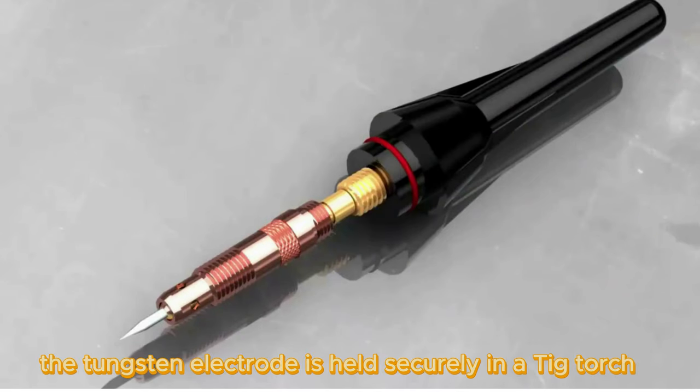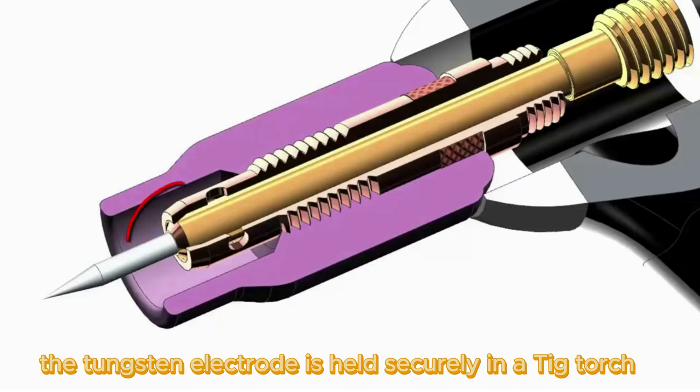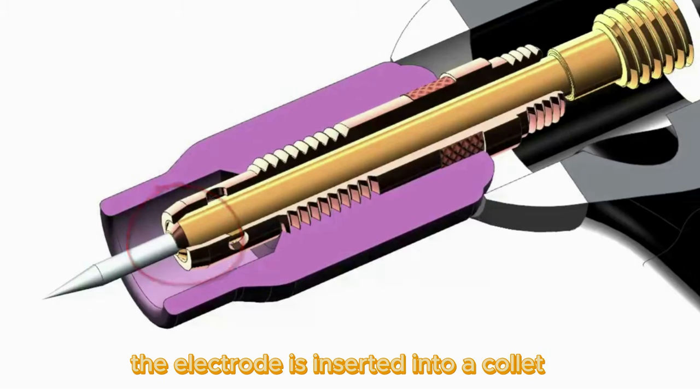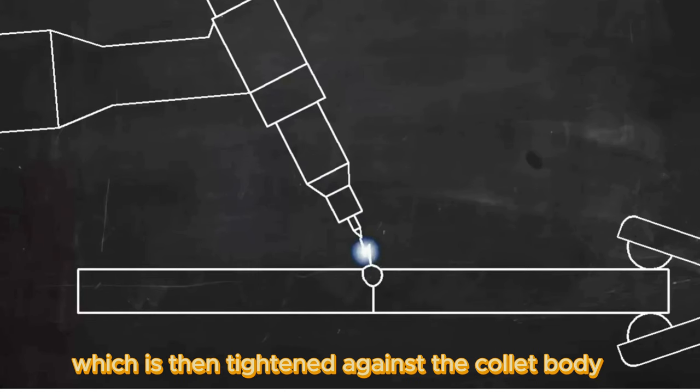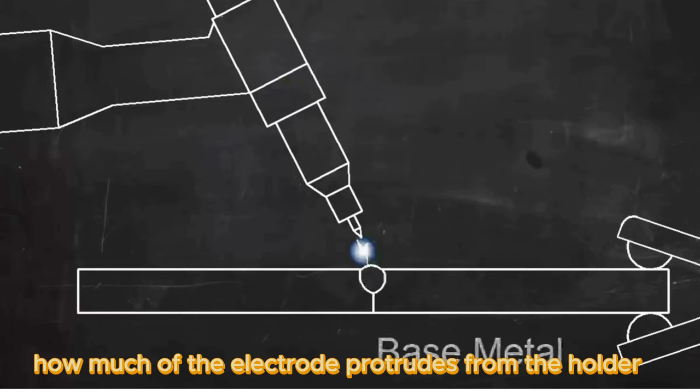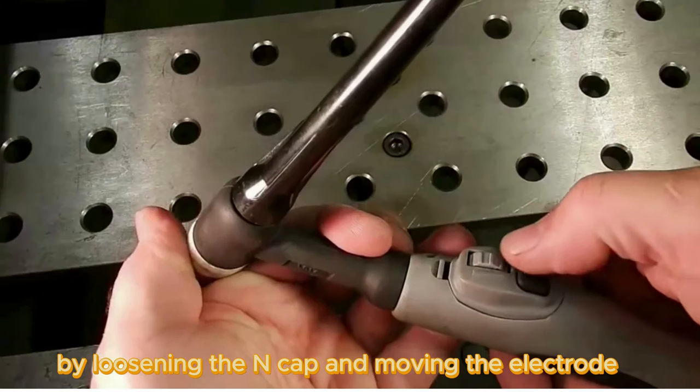In TIG welding, the tungsten electrode is held securely in a TIG torch. The electrode is inserted into a collet, which is then tightened against the collet body. You can adjust how much of the electrode protrudes from the holder by loosening the end cap and moving the electrode.